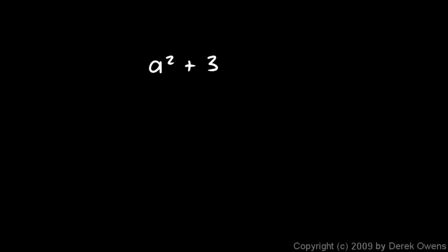OK, let's do another. 5x squared plus 10x. OK, 5x squared is 5 times x times x. And 10x is 5 times 2 times x. So again, I can get a 5 out of each term and an x out of each term.